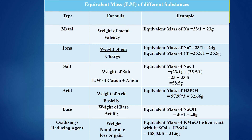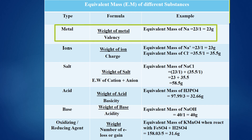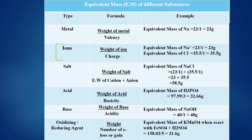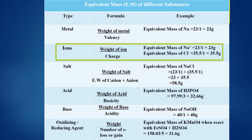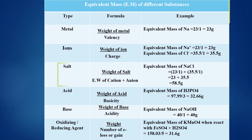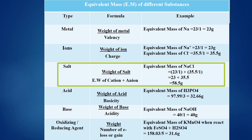For calculating equivalent mass of a metal, divide the atomic weight of the metal by its valency. For calculating equivalent mass of an ion, divide the weight of the ion by its charge. For calculating equivalent mass of a salt, find the equivalent masses of both the cation and anion, then add the equivalent mass of both cation and anion.